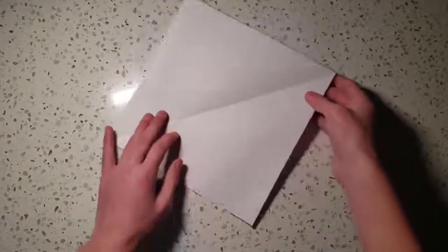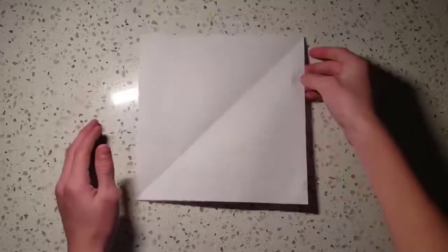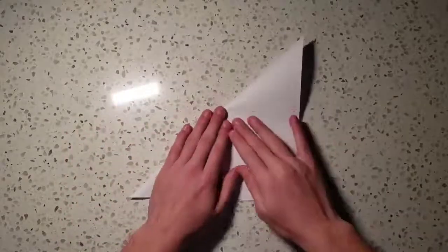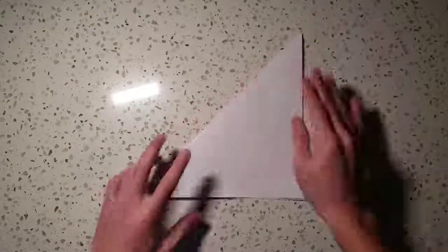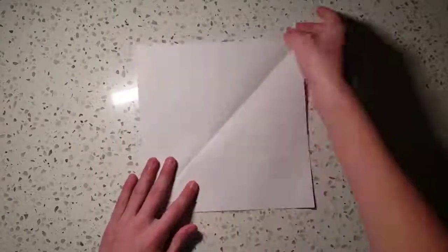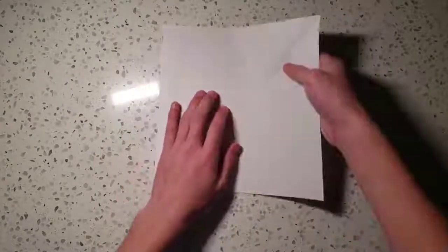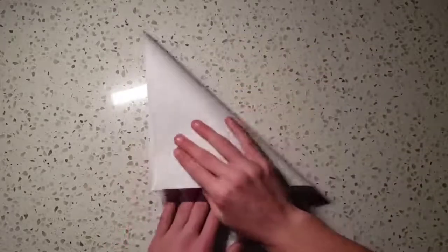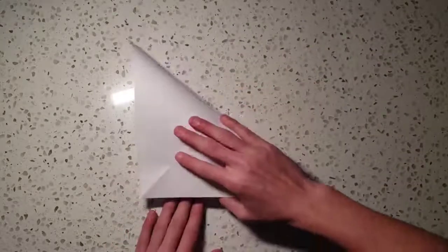And the first thing you want to do is something called a preliminary base fold. If you don't know how to do that, I'm going to show you how to do it right here. First, you fold the corners down to each other. This was already put down because if you watched my video, which is again down in the description, it comes with the mark right there.